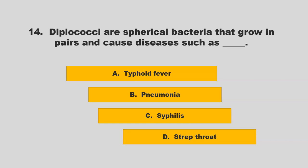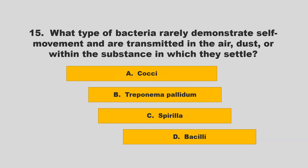Diplococci are spherical bacteria that grow in pairs and cause diseases such as: typhoid fever, pneumonia, syphilis, or strep throat. The correct answer is B: pneumonia.